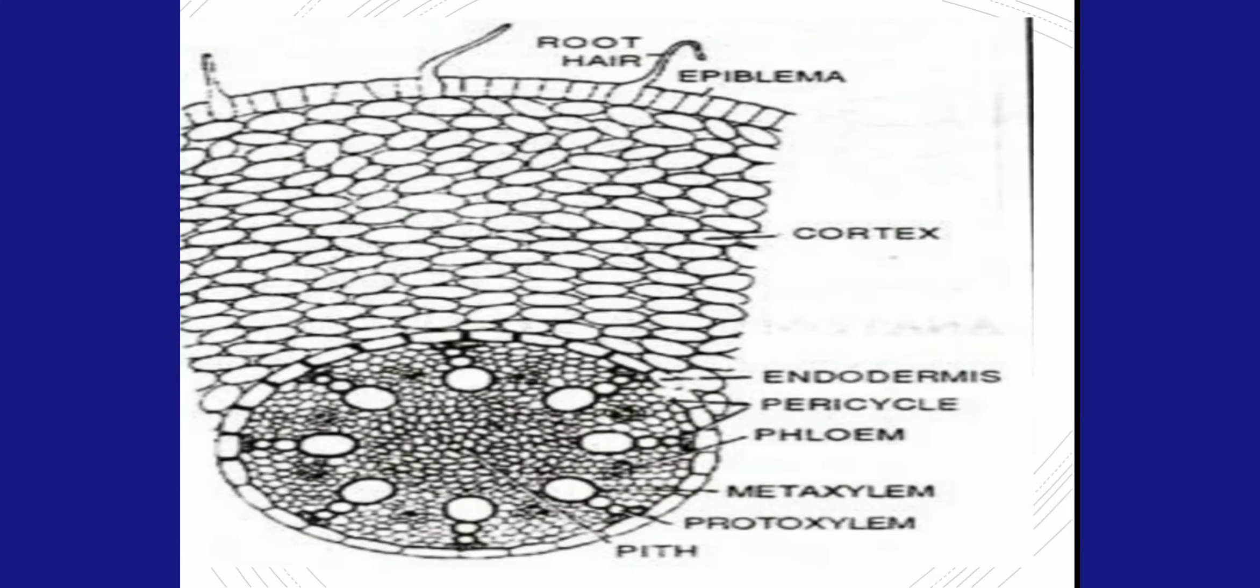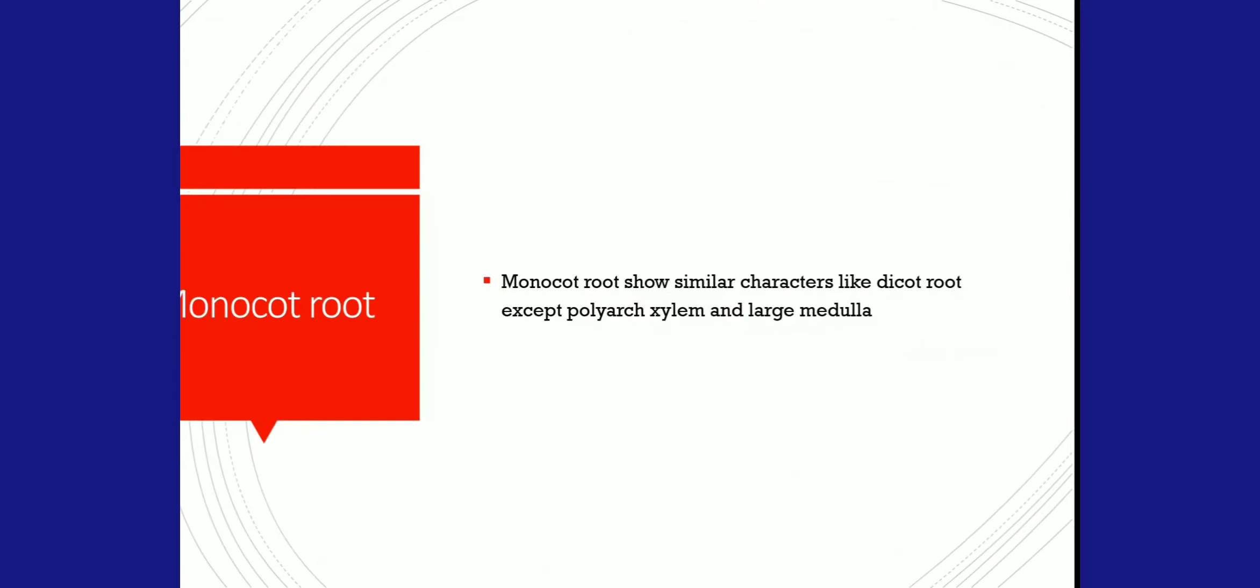Coming to the monocot root structure, it is similar to dicots with a few exceptions. The xylem is polyarch, meaning more than six xylem bundles are present, and a larger medulla can be seen in monocots.